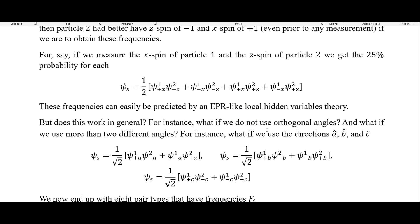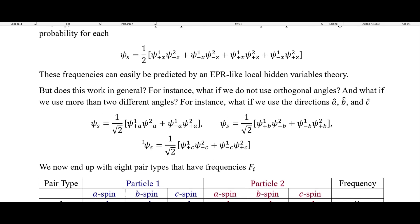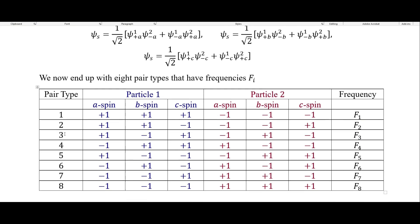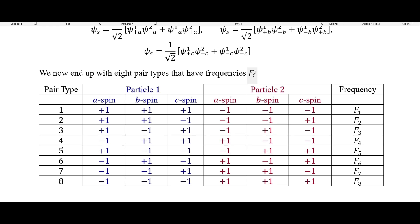What if we do not use orthogonal angles, and what if we use more than two different angles? For instance, what if we use the directions A, B, and C? So these are the entangled states for each of these. We now end up with eight pair types that have frequencies represented by F1, F2, and so on up to F8. We can have all of these possible combinations for A, B, and C spin directions. What we see is just that each of these has to be opposite.